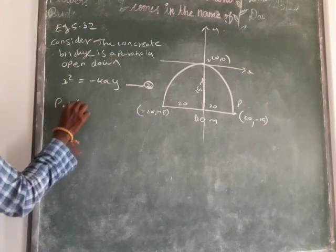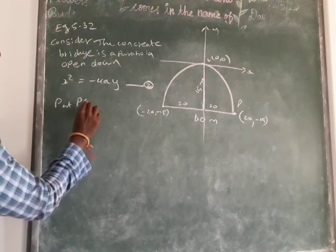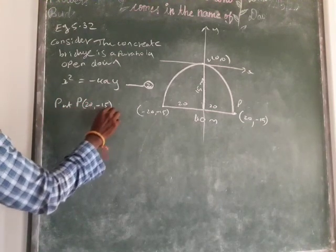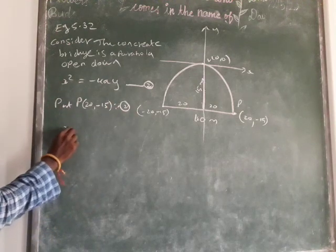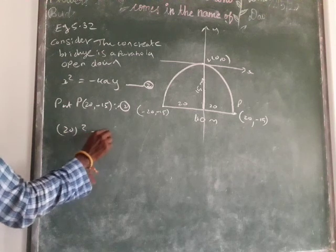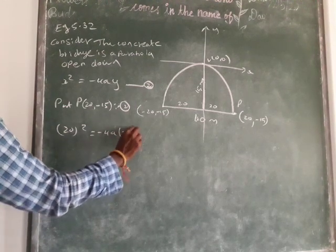So put P(20, -15) in equation 1. So instead of x substitute 20 squared, then -4a into y, -15.